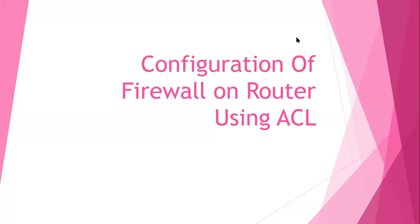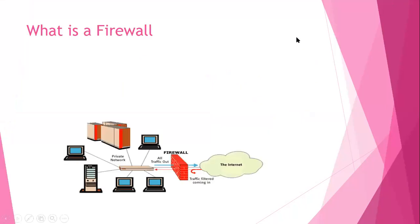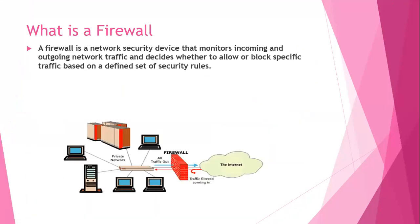So first of all, what is a firewall? A firewall is a network security device that monitors incoming and outgoing network traffic, and it decides whether to allow or to block specific traffic based on a defined set of security rules. Here we have an example of a firewall located between the private network and the public network where we have the internet. Based on the conditions, we can filter the traffic on the inbound port or towards the outbound port.